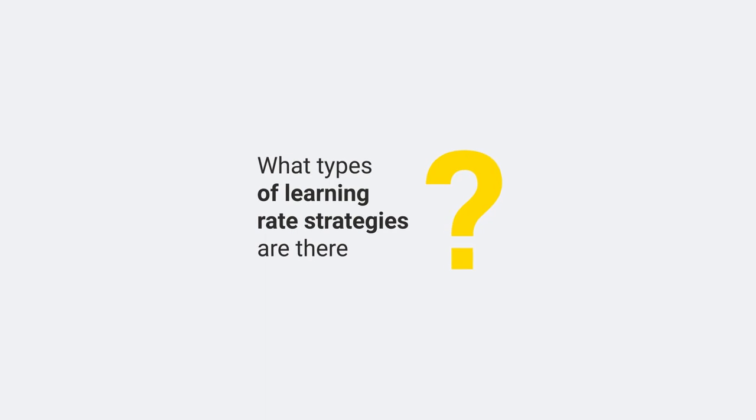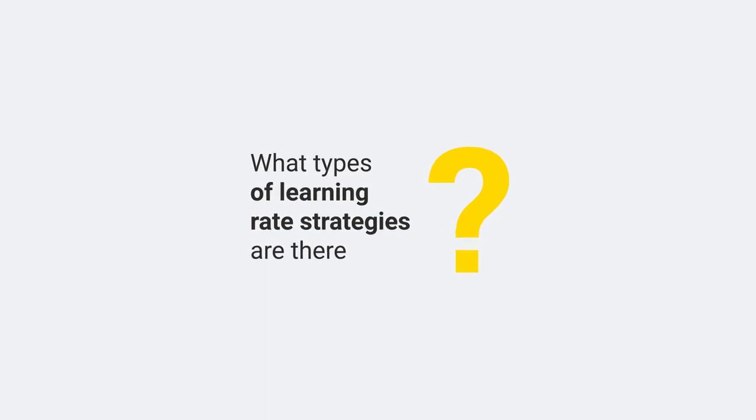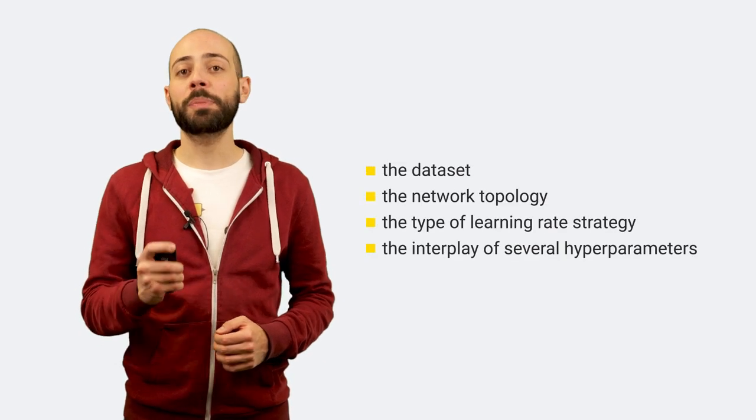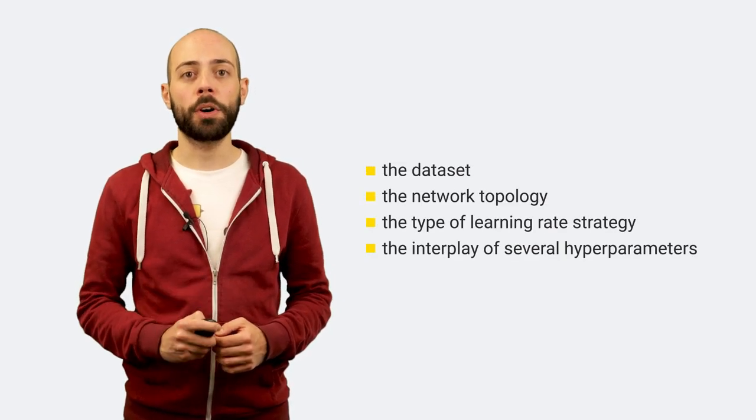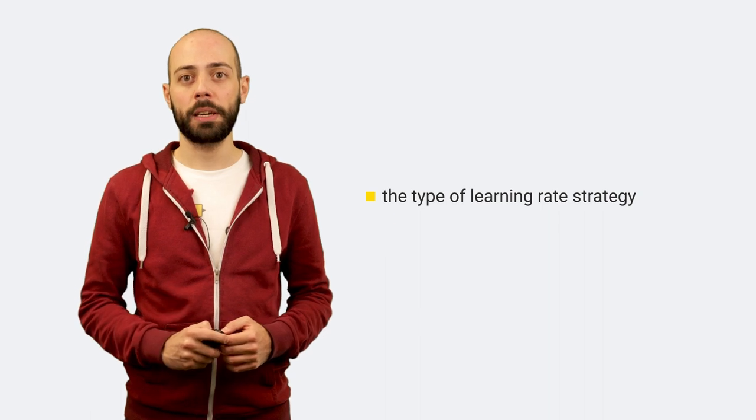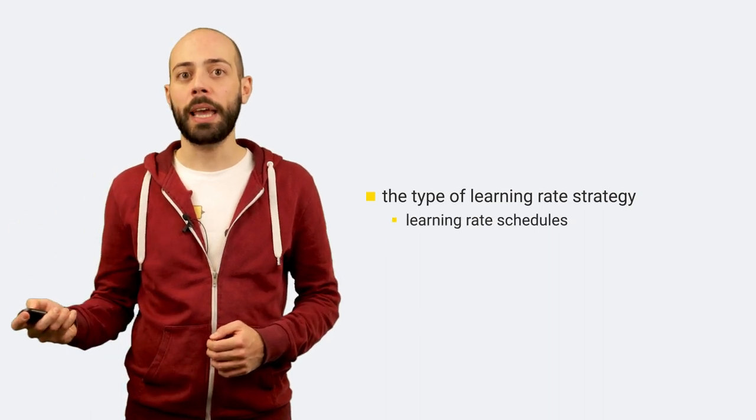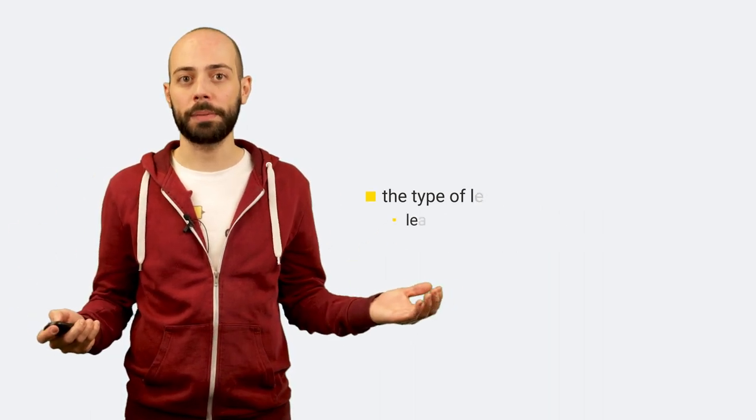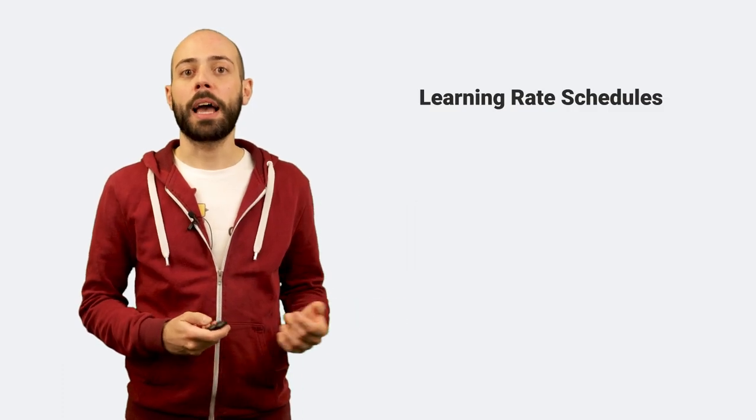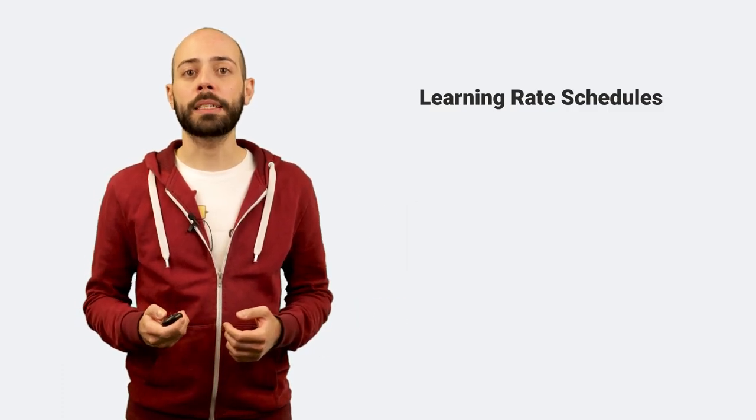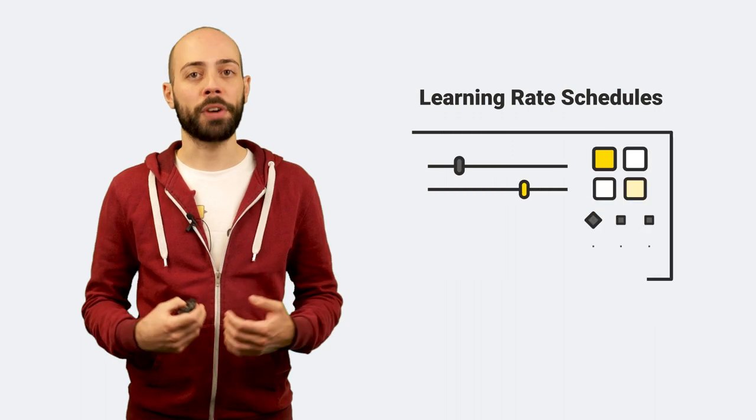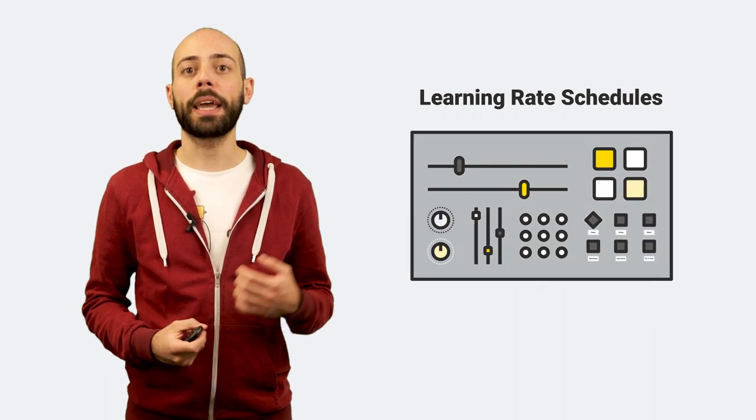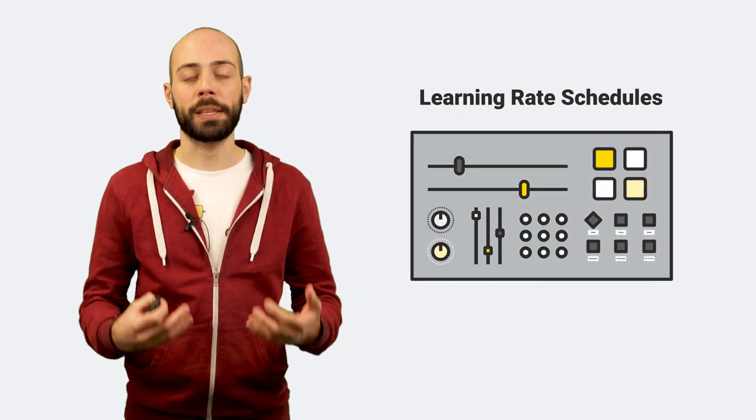What types of learning rate strategies are there? An alternative to using a fixed learning rate is represented by two major types of learning rate strategies: learning rate schedules and adaptive learning rate methods. Learning rate schedules adjust the value of the learning rate according to a predefined framework between epochs or iterations as training progresses.